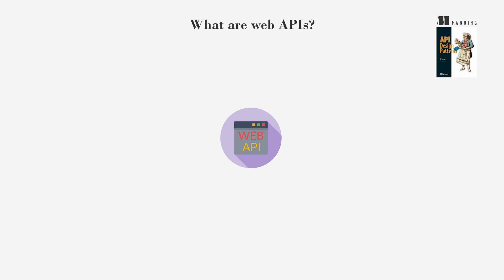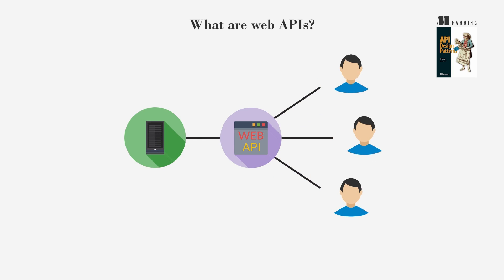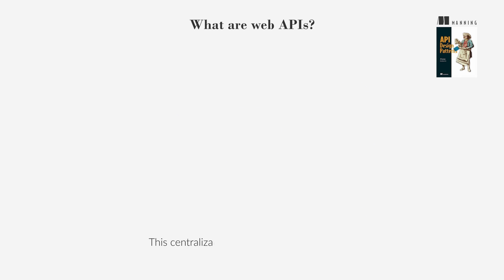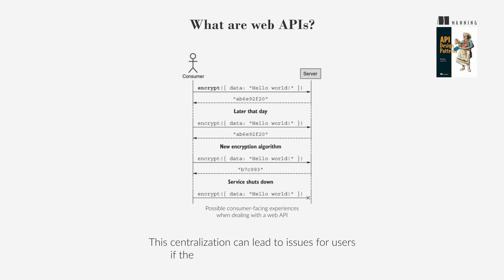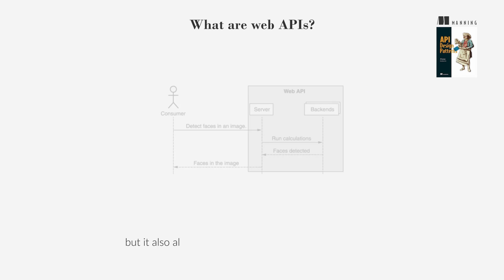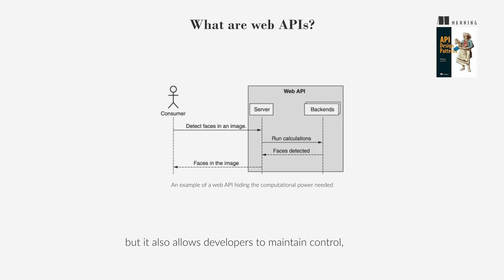Web APIs are a specific type of API designed for network access by various users. They differ from library APIs in that they are centralized. Changes made by developers affect all users immediately. This centralization can lead to issues for users if the API is altered or discontinued, but it also allows developers to maintain control, protect intellectual property, and offload resource-intensive tasks.